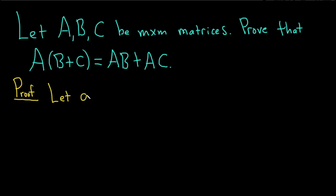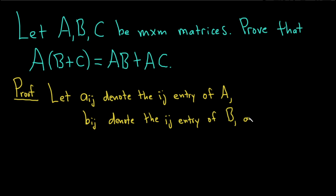So we're going to let aij denote the ij entry of A, bij denote the ij entry of B, and cij denote the ij entry of C.